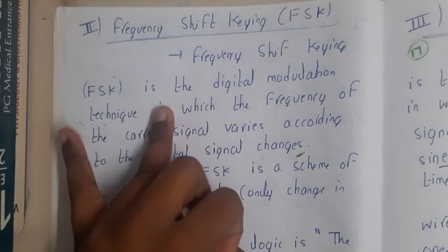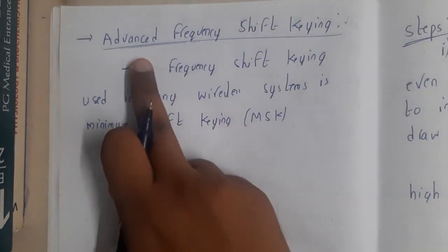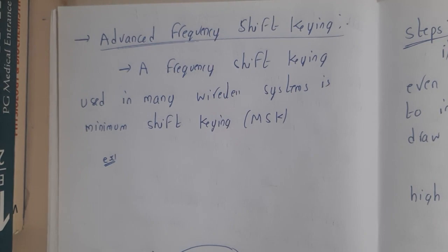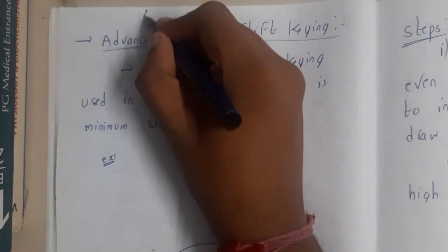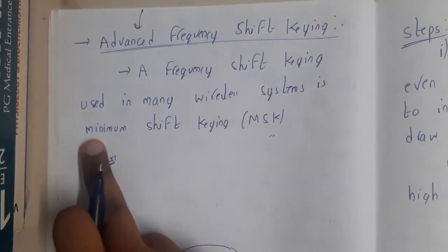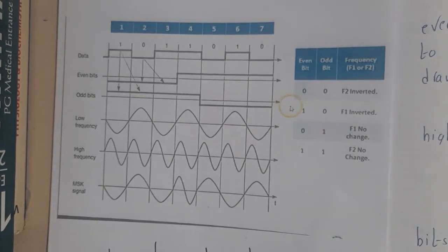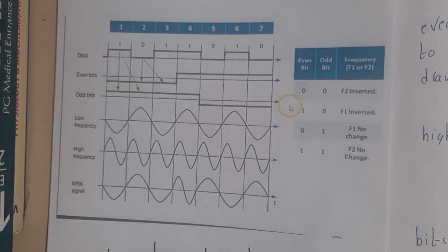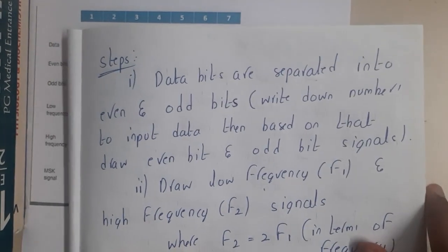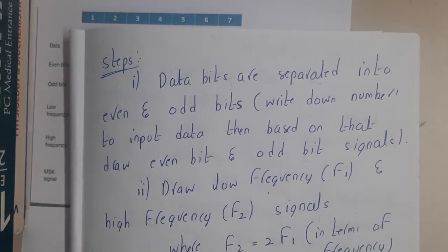Now we are done with three different types: frequency shift keying, amplitude shift keying, and phase shift keying. Now let us continue with one advanced method — Minimum Shift Keying (MSK). This is the same concept as frequency shift keying but with a small twist, which is why it is called an advanced one. The frequency shift keying used mainly in wireless systems is Minimum Shift Keying. The diagram looks like this — it may seem complex by observation, but once we understand the steps and the logic, it will be a piece of cake.